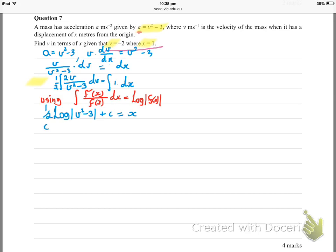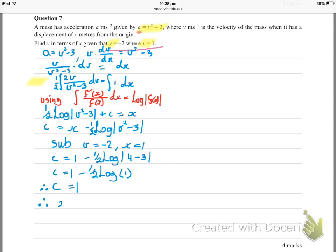Integrate the left hand side: modulus of v² minus 3 gives us my integral, and I must include my c parameter. I'm going to rearrange the equation to get c by itself, then take our initial condition, sub it in, and solve for c. c gives us just 1. Why? Because log of 1 equals 0, so c equals 1.